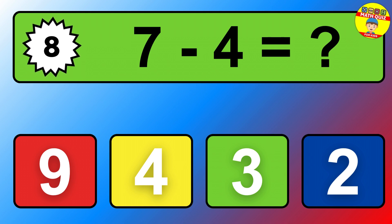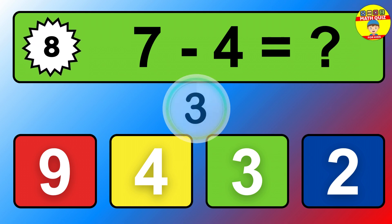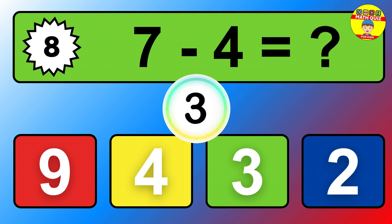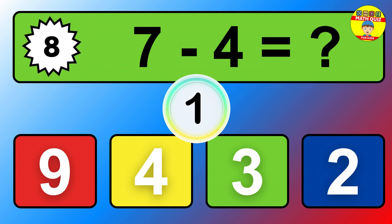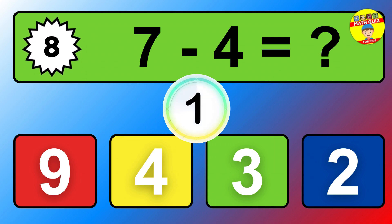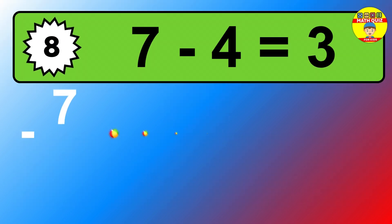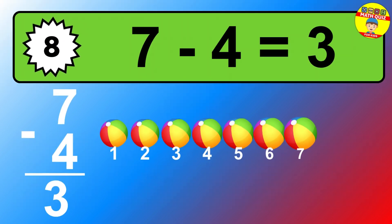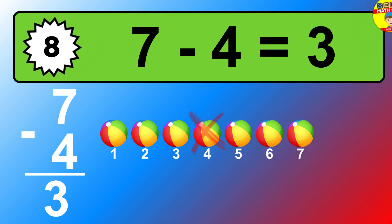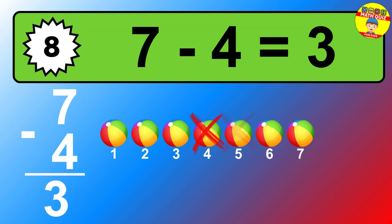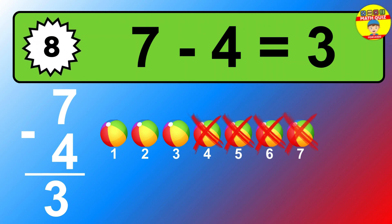Question eight: seven minus four equals what? So the answer is seven minus four is three. Let's count it. One, two, three.